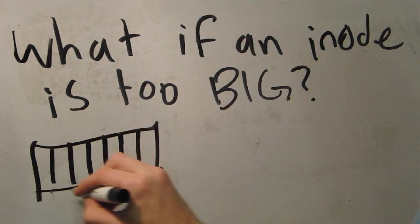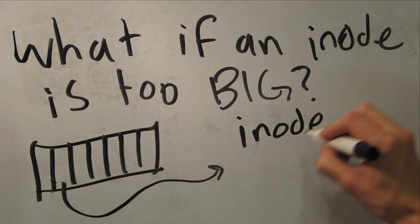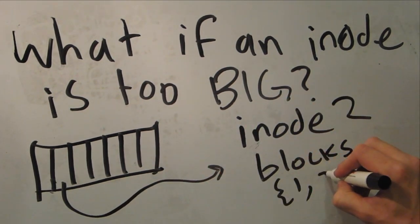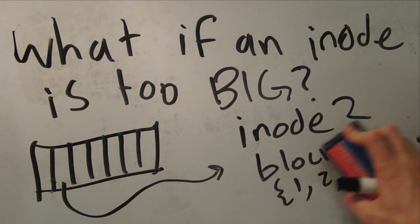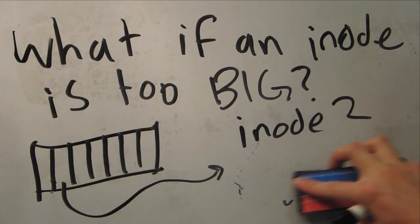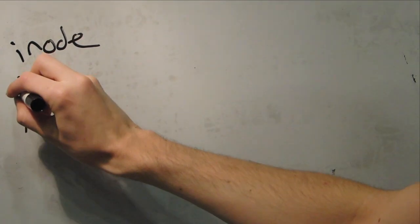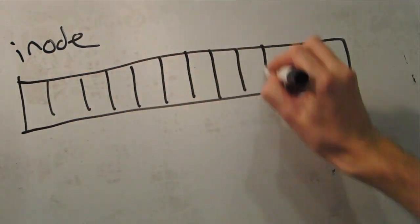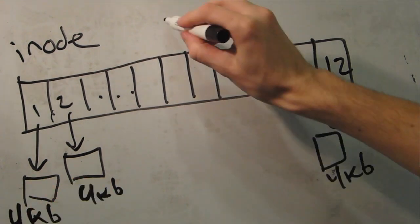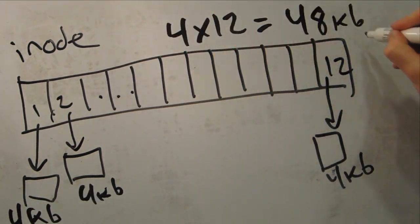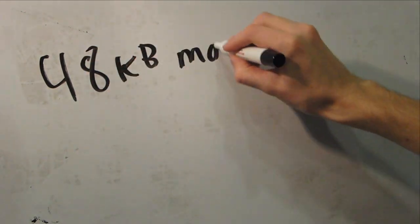Each inode is the same size. Let's look at inode2. If it were to represent a file 40 blocks long, you'd think it would contain 40 block pointers. But no — since inodes are a tiny pre-allocated size, they simply don't have enough room for 40 block pointers. Each inode has an array of 12 block pointers. The standard block size is 4 kilobytes, which means you have 4 times 12, or 48 kilobytes of storage.